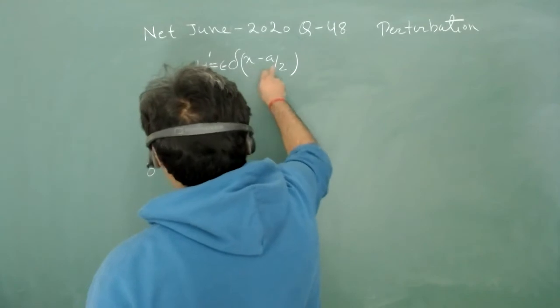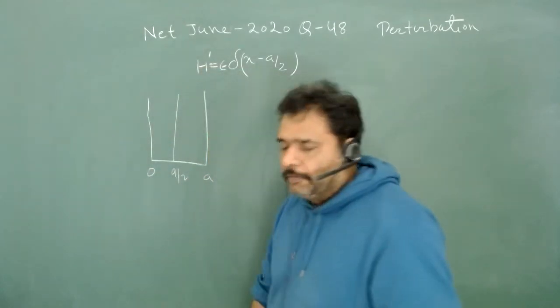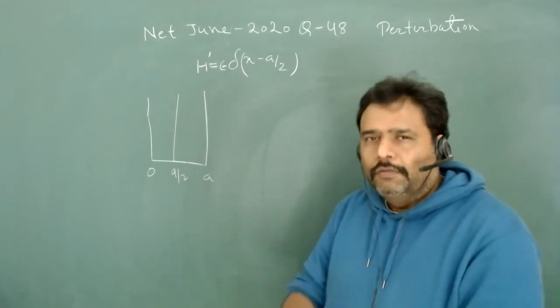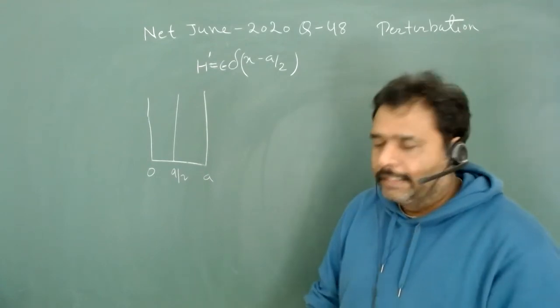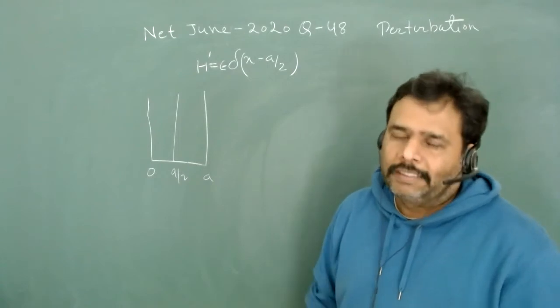There's a Dirac delta potential at x equals a/2. What we have to do is calculate the change in energy up to epsilon order, or first order correction, in the ground state as well as for the first excited state.